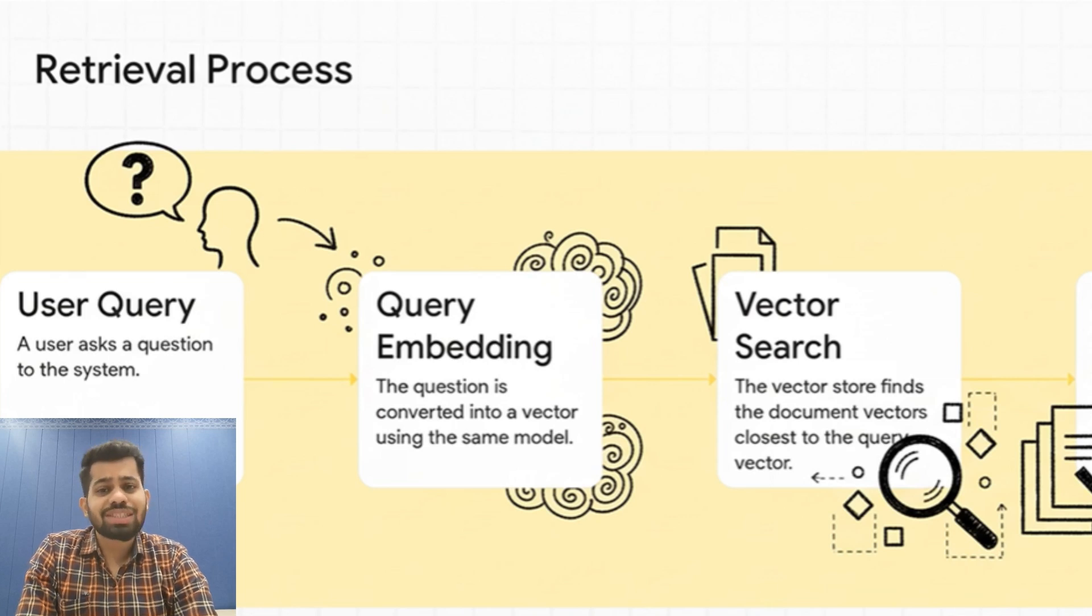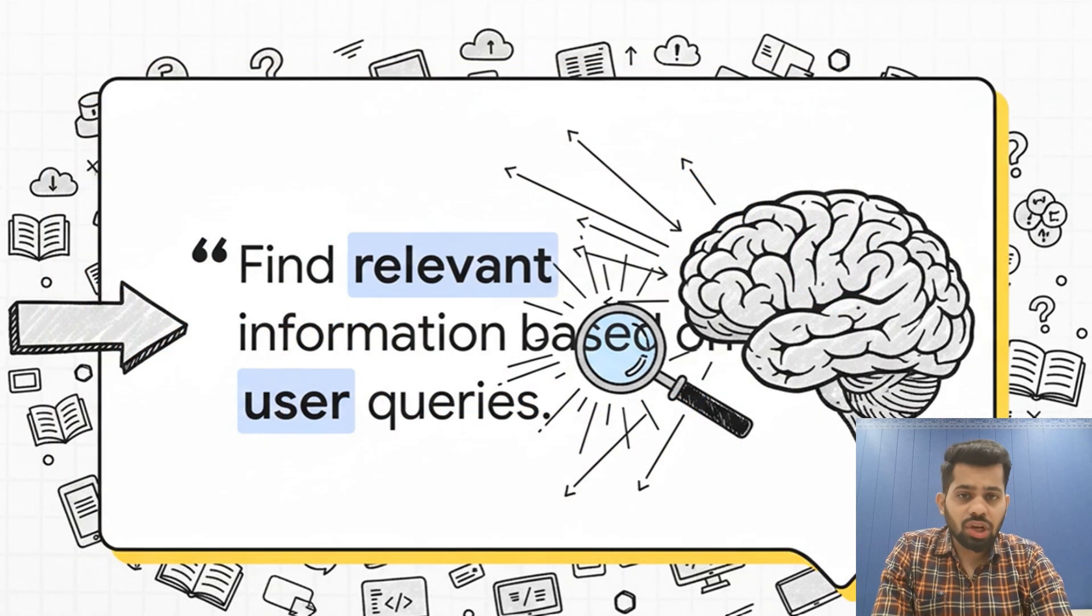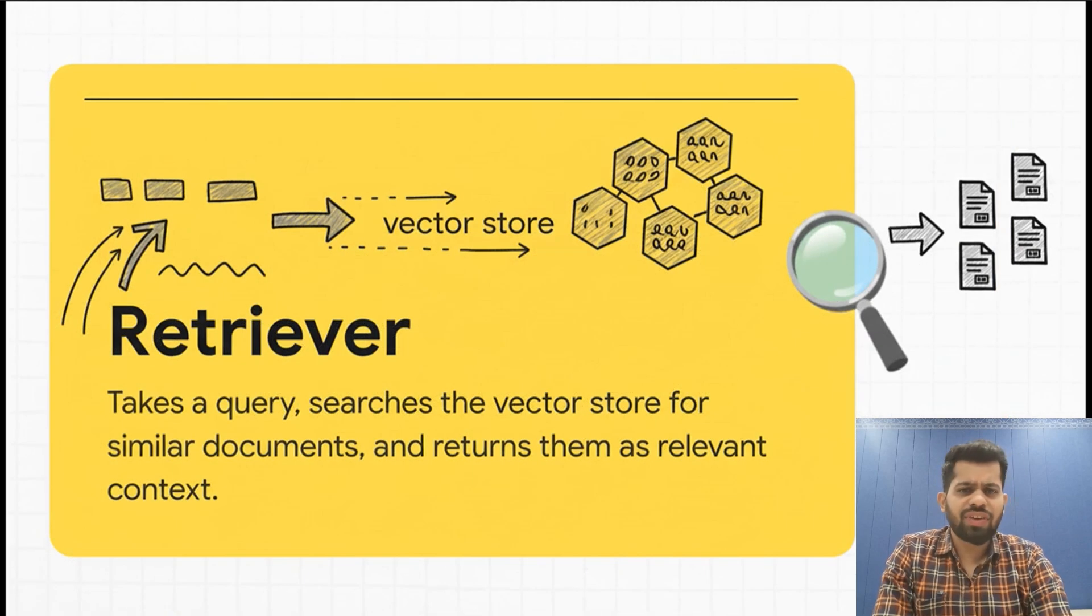The query goes through the embedding model and becomes a vector just like your document data. Now you have your query as a vector, the numerical coordinates we talked about earlier. This query vector will be compared against all the document vectors in your vector store. Retrievers are the abstraction layer that makes search very simple. Instead of manually querying the vector store, you use a retriever. A retriever has only one job: given the query, return the relevant documents.